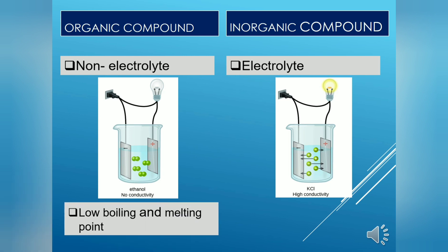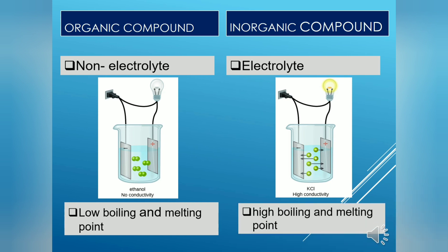The interactions between organic compound molecules are weak, that's why they have low boiling point and melting point. Whereas in inorganic compounds there is a strong interaction, so inorganic compound is harder to break compared to organic compound. Thus, inorganic compound has higher boiling point and melting point.